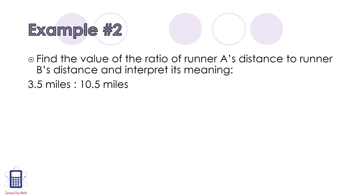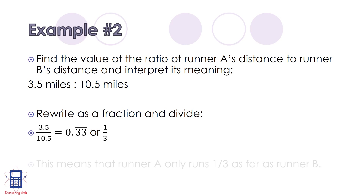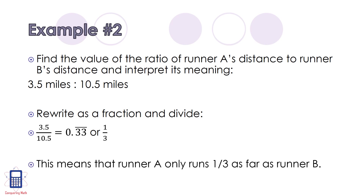For this example, we need to find the value of the ratio of runner A's distance to runner B's distance and interpret the meaning. We have 3.5 miles to 10.5 miles. So again, rewrite as a fraction and then divide. We have 3.5 divided by 10.5, which equals 0.3 repeating, which is equivalent to 1 third. This means that runner A only runs 1 third as far as runner B.